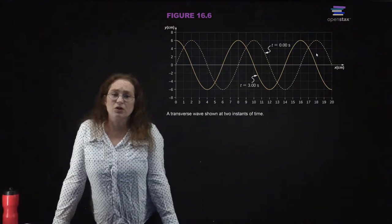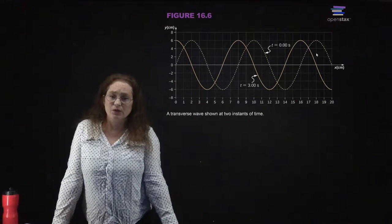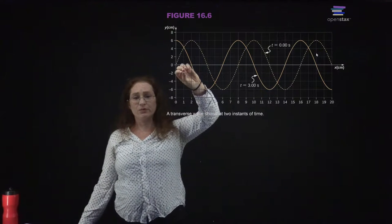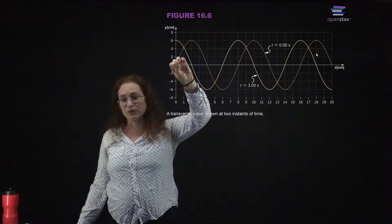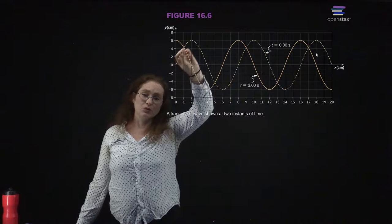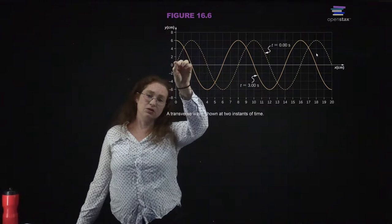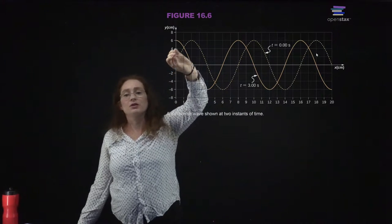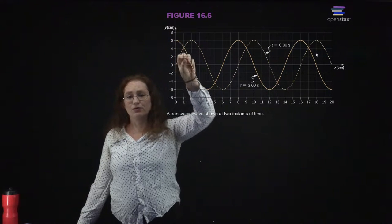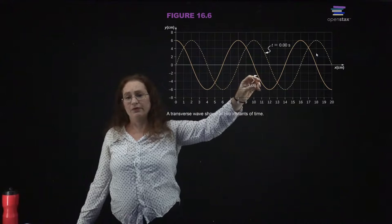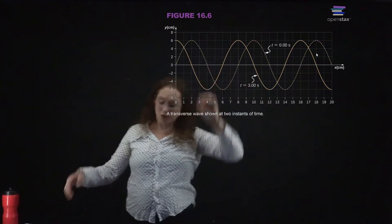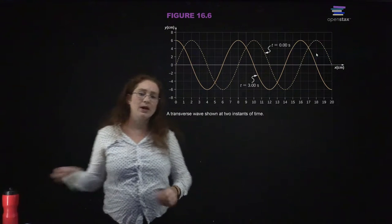We want to start to quantify what's going on. Here you can see a transverse wave at two different points in time. Using a convention where T equals zero starts at zero amplitude, you can see the wave at the beginning, and then the wave travels. If three seconds later you see the solid line, you can talk about the properties of that wave.